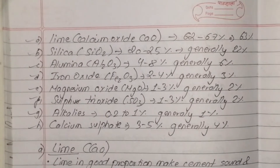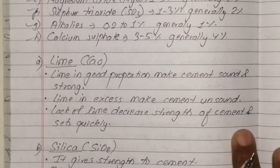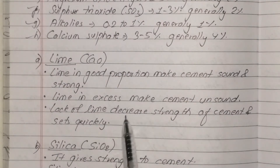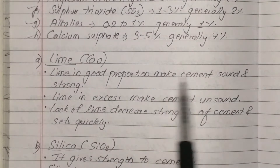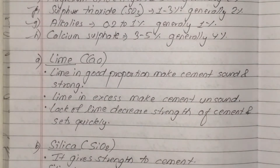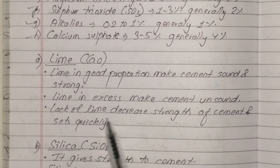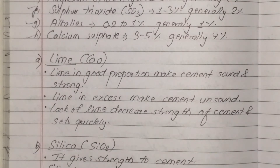Lime makes the cement sound and strong. It gives strength. In excess, lime will cause the cement to change quickly in strength.